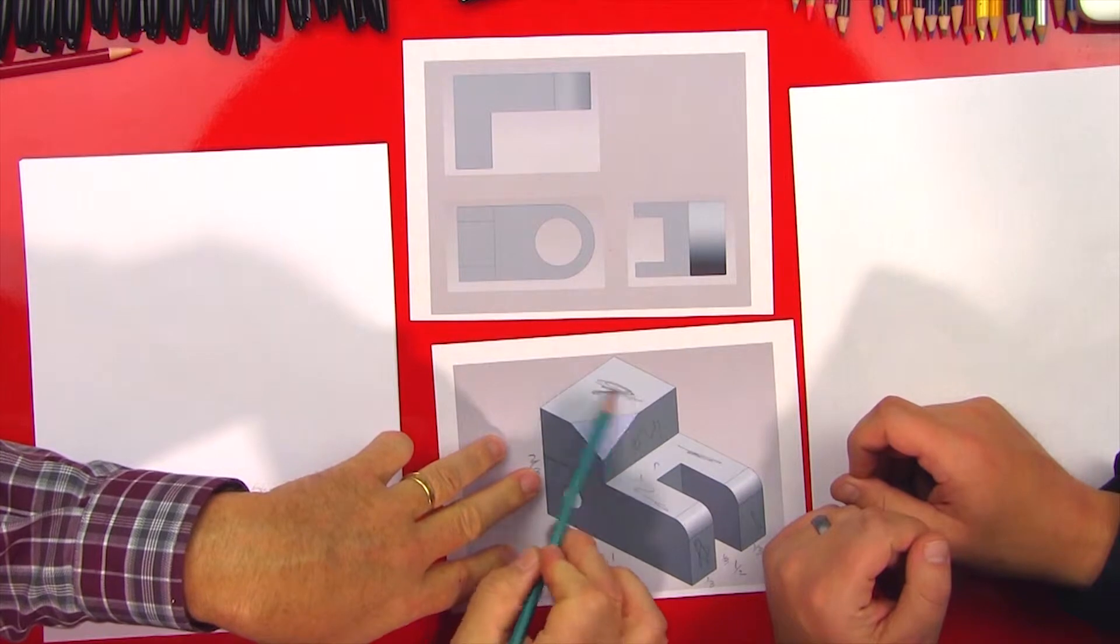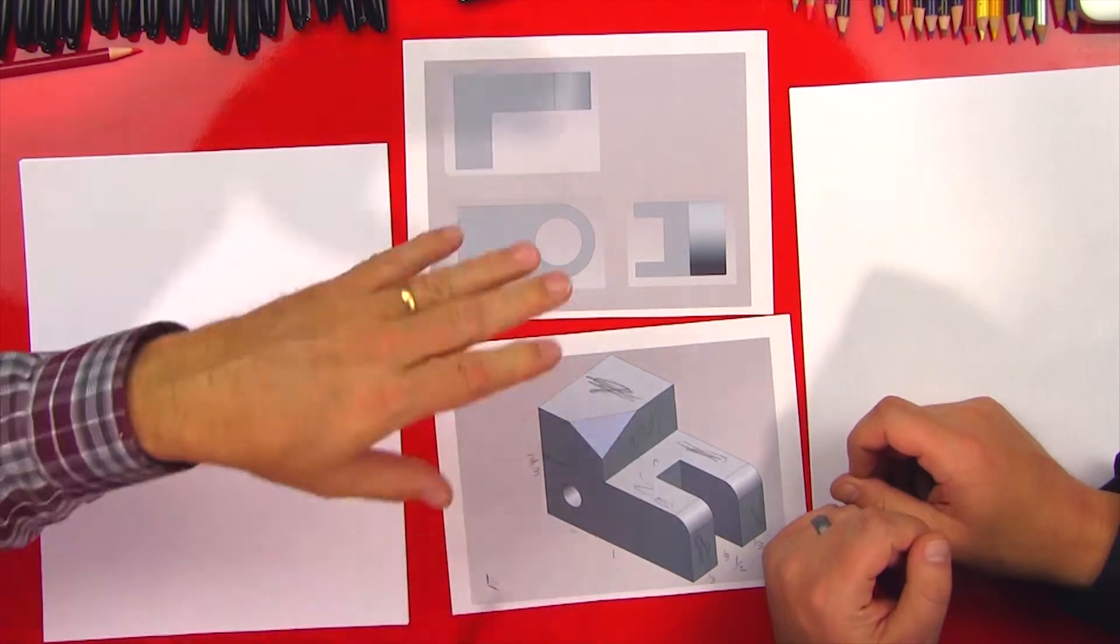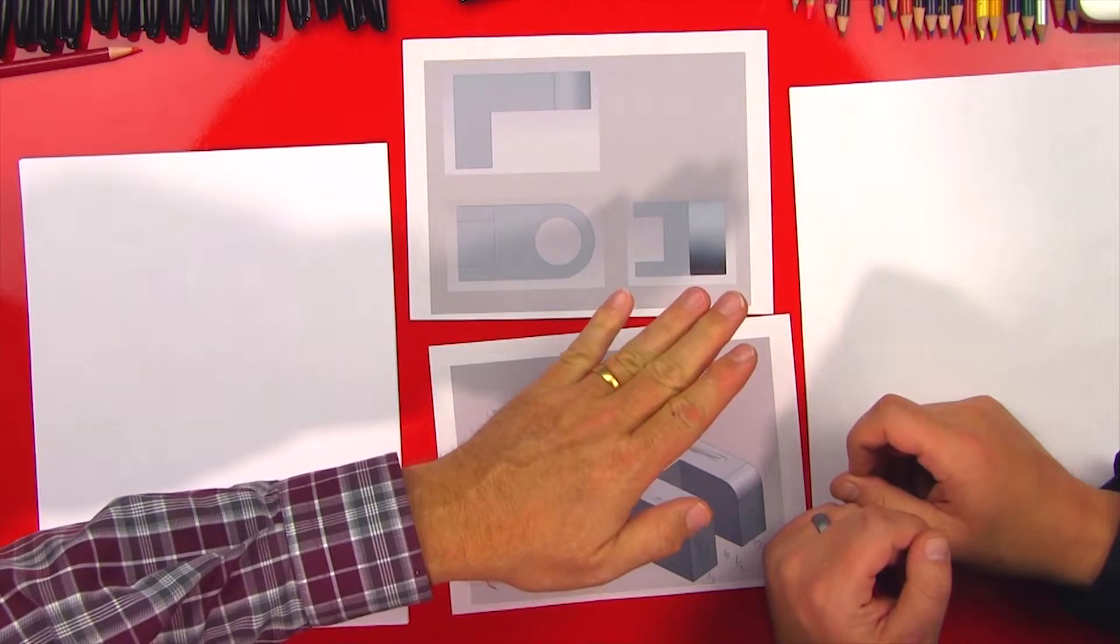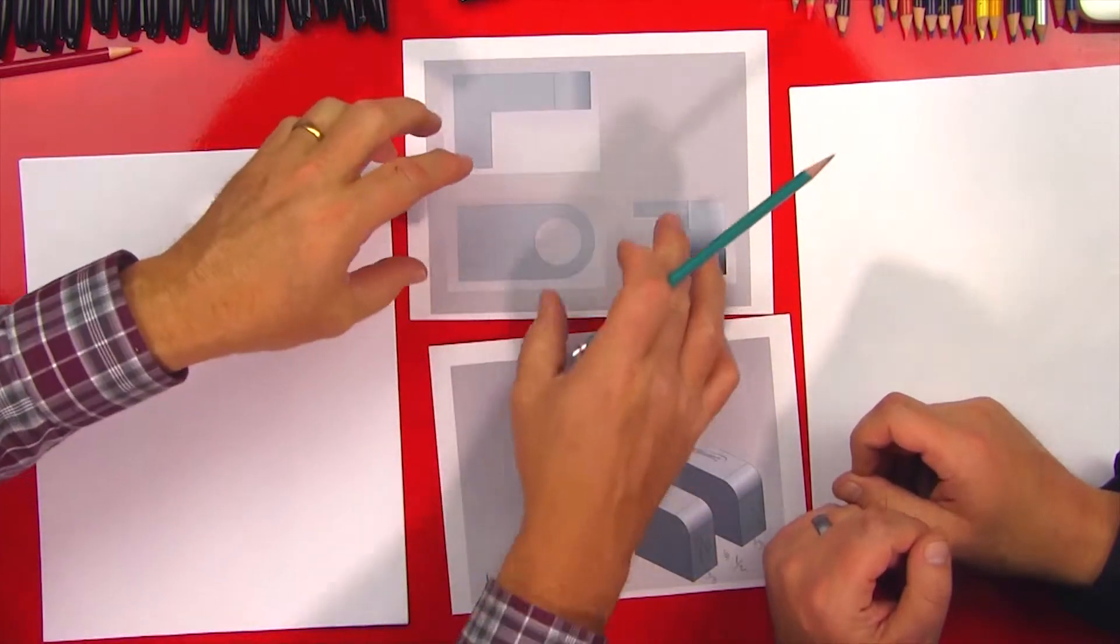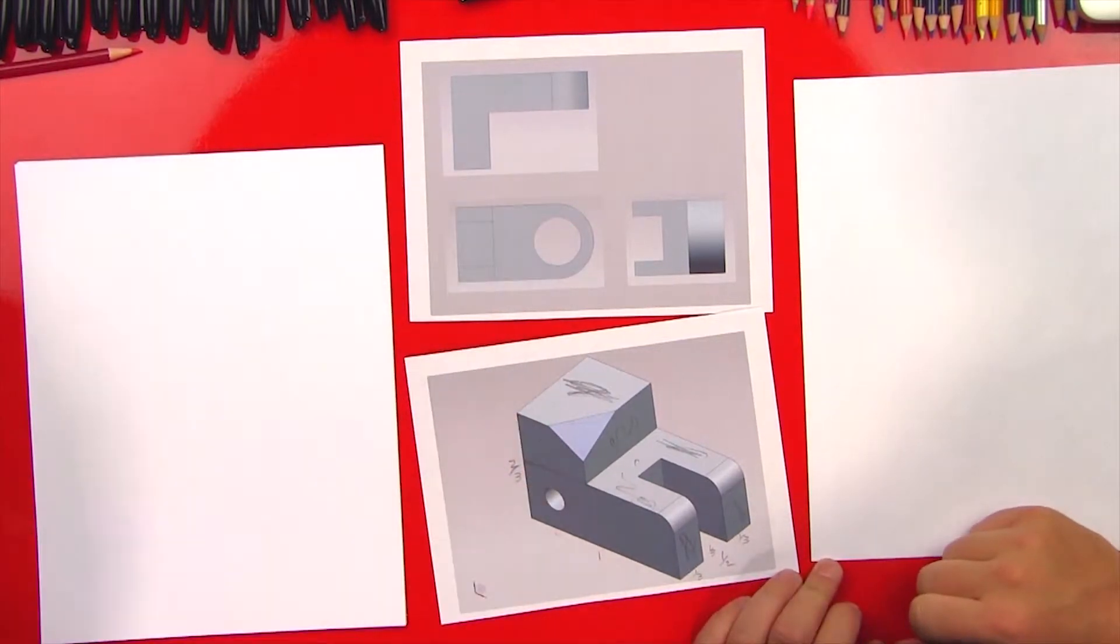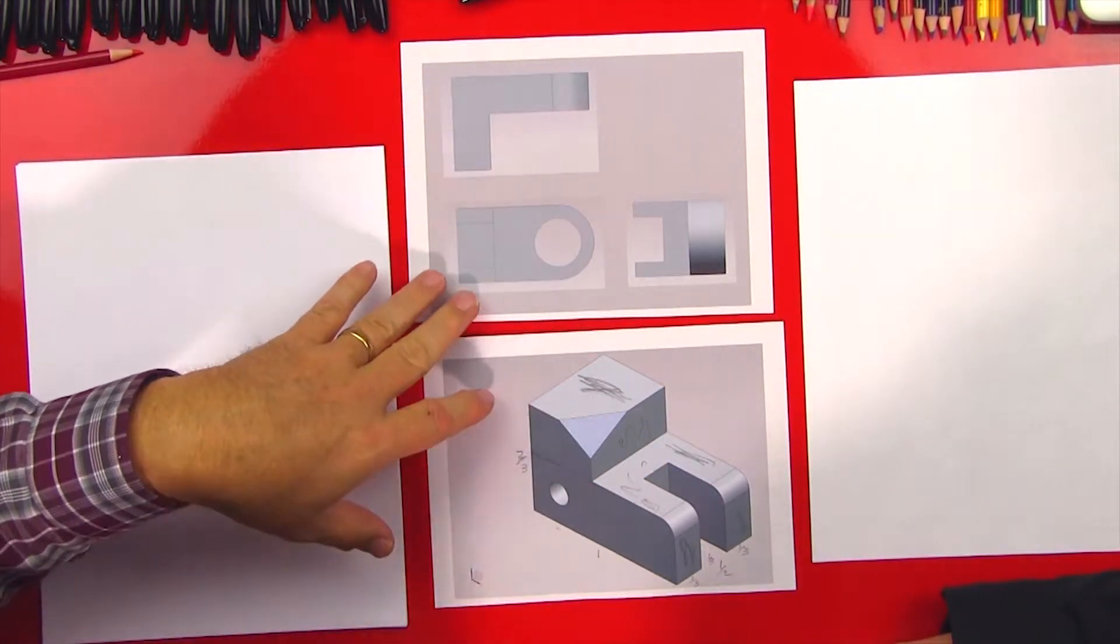So just like this surface here and this surface, when they're on the face of the cube, they're up above. But you need to use the three views to figure out how far down they drop. So here's an example.